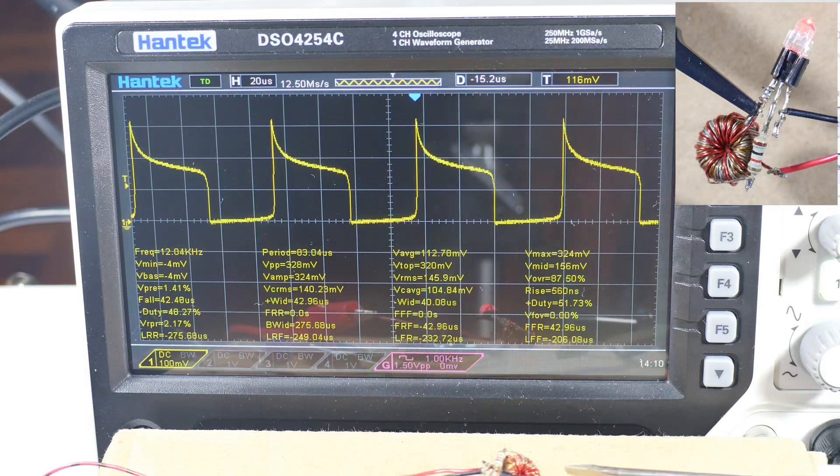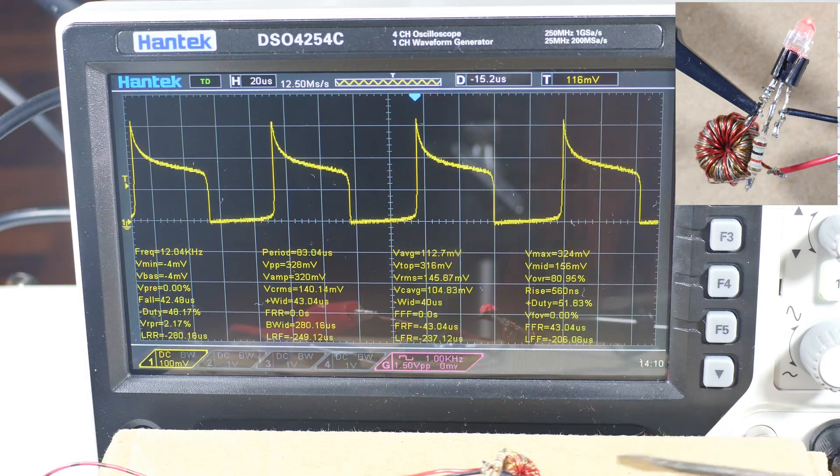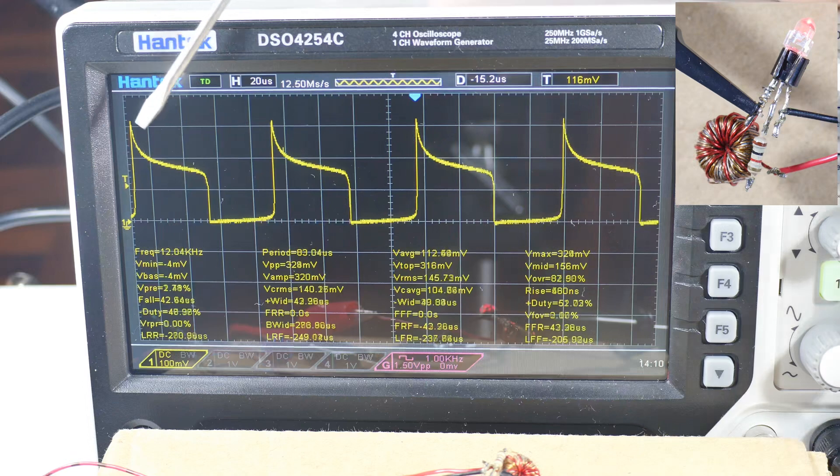We have the same setup with the brown Joule Thief. And right now it's operating at one volt. If we go over here and look at the oscilloscope,